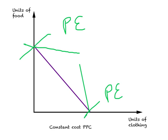We have examined the production equilibrium point for different types of PPC — increasing cost, decreasing cost, and constant cost. You should know and understand all of these cases, and remember that at production equilibrium the country is generating the highest possible income. This concludes our discussion of production equilibrium. Thank you for your time.